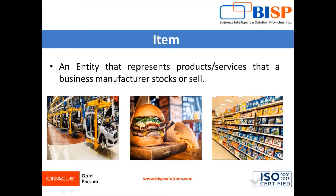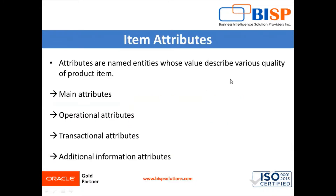For example, in a manufacturing company, items are in the form of cars, pumps, and electronics. In the case of a restaurant, items are in the form of burgers, pizza, french fries, or tomato soup. In the case of a supermarket, items are in the form of grains, biscuits, packaged foods, fruits, and vegetables. In other words, items are the resources that you maintain in your inventory, or the components that make up your products or services.